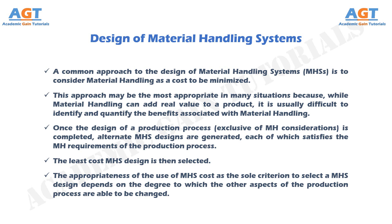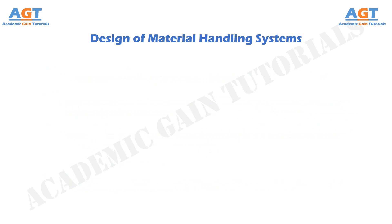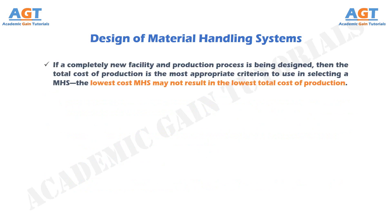If a completely new facility and production process is being designed, then the total cost of production is the most appropriate criterion to use in selecting a material handling system. The lowest cost material handling system may not result in the lowest total cost of production.